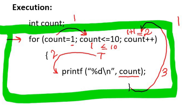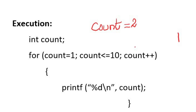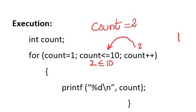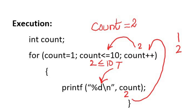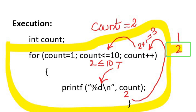At the end of the first iteration, the value of count is 2. The second iteration starts — control moves to the testing condition again. Two is less than or equal to 10, so the condition is again true. The body executes and prints 2 on the output screen. Control moves again to the increment section — the value of count, which is 2, is incremented by 1 and becomes 3. The second iteration is finished.